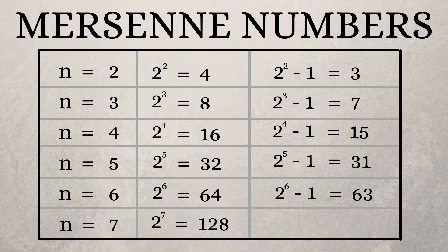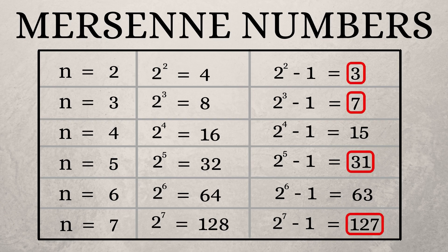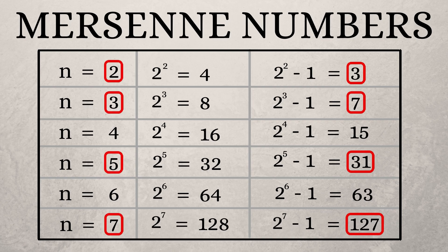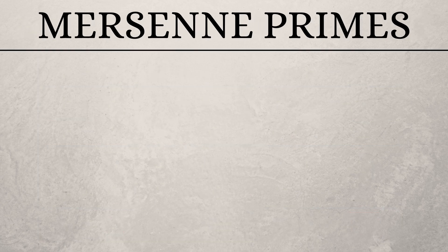And when n is equal to 7, the Mersenne number is 127. And the list goes on. Now, out of the Mersenne numbers, let us highlight only the prime numbers. We can find that the Mersenne numbers are prime when n is a prime number. So, they are called as Mersenne primes.